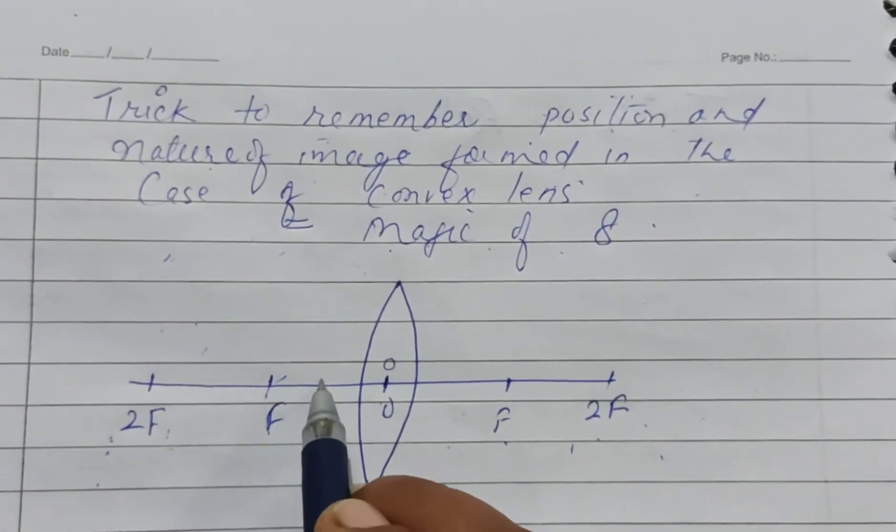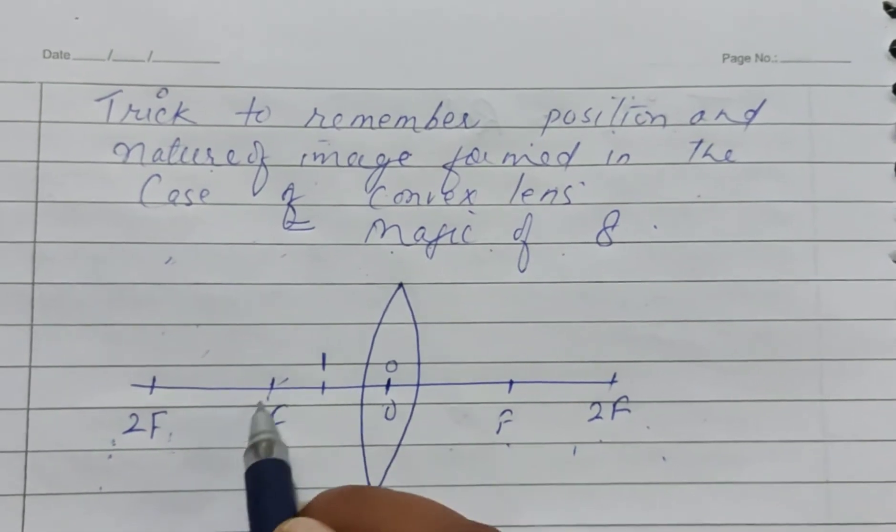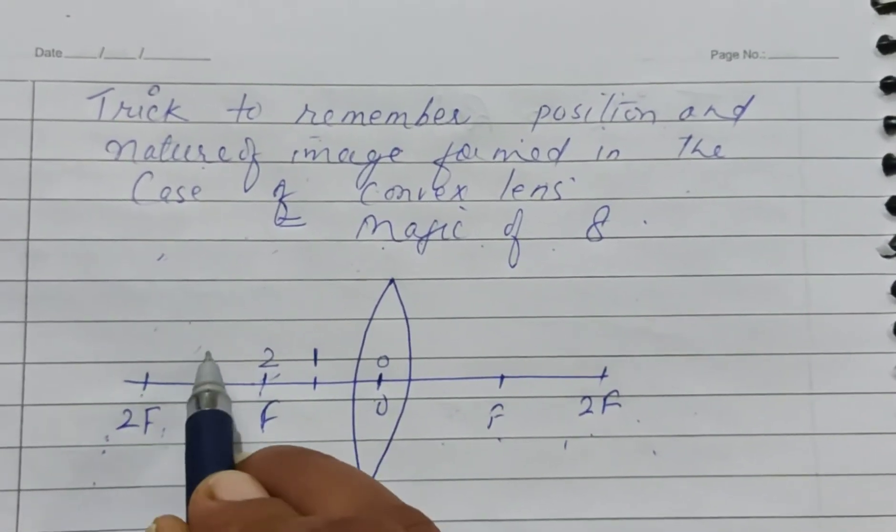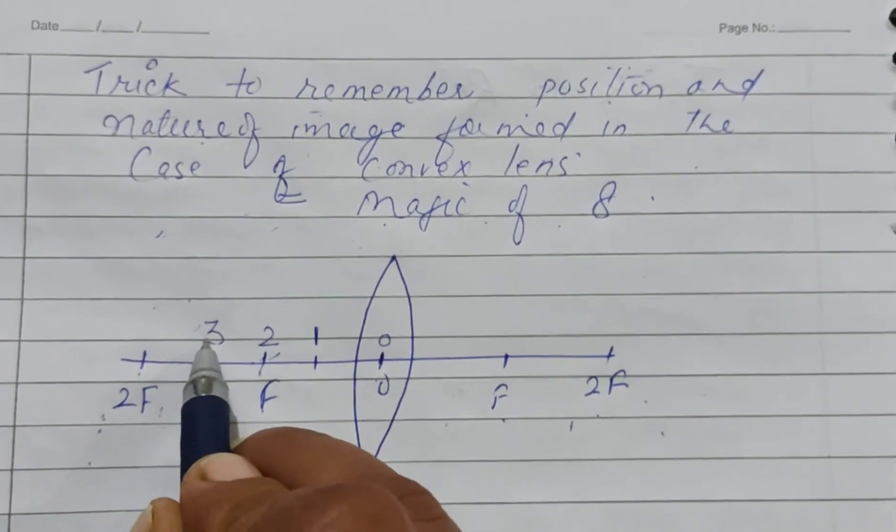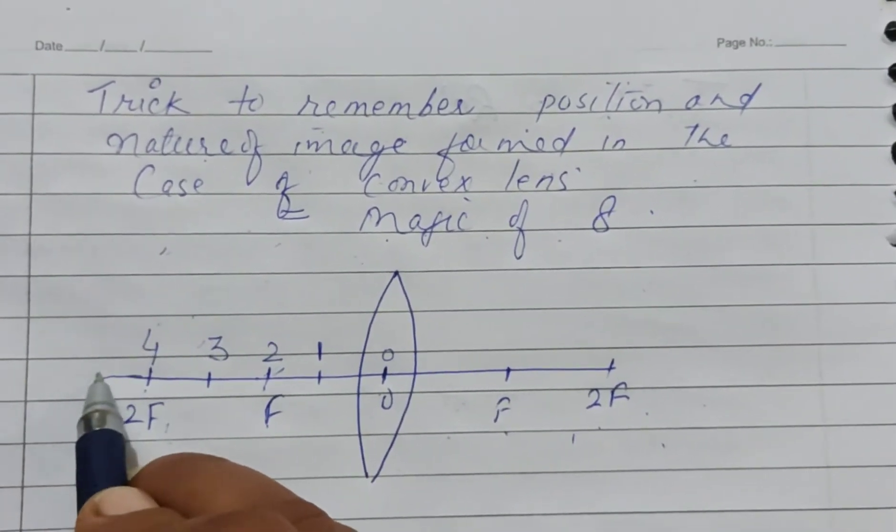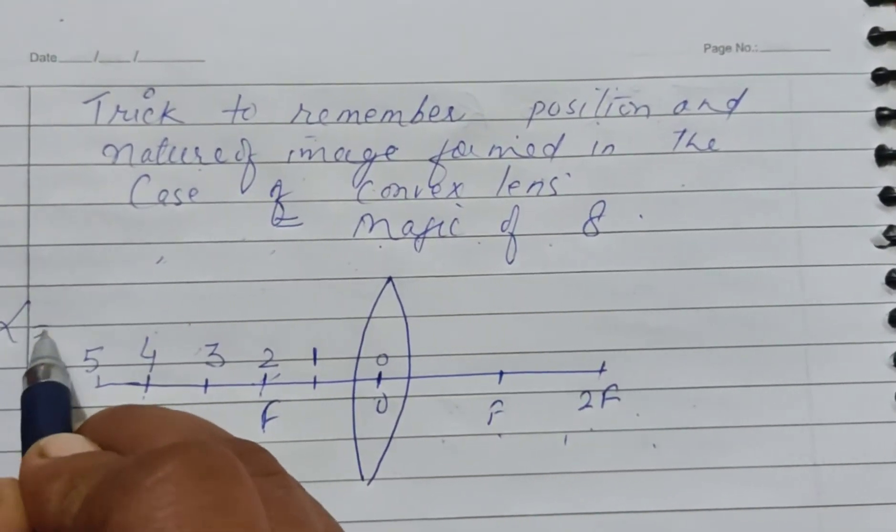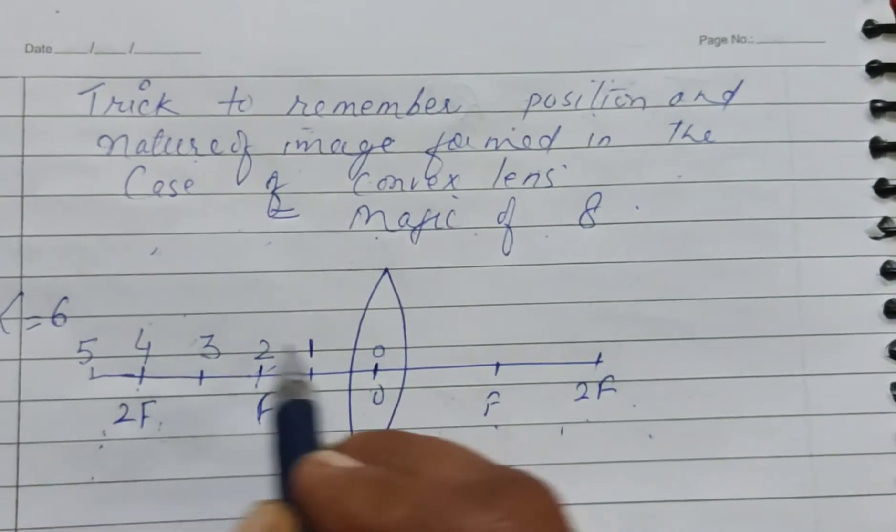What we have to do: f will be named as point 3, 2f will be 4, and beyond 2f will be 5, and we will write 6 for infinity. We will write a number 7 here.